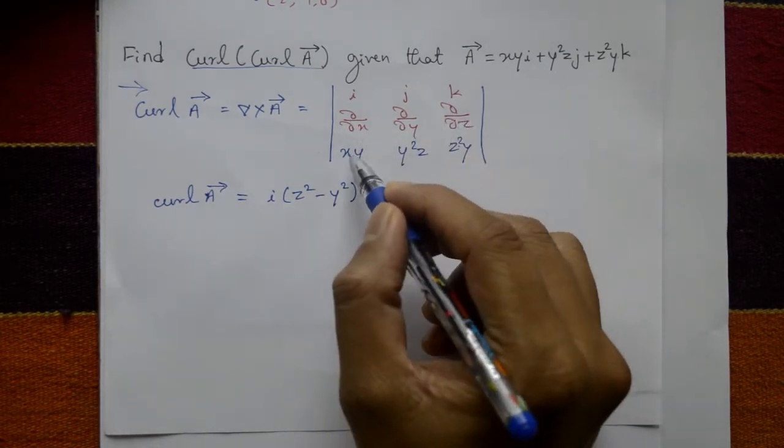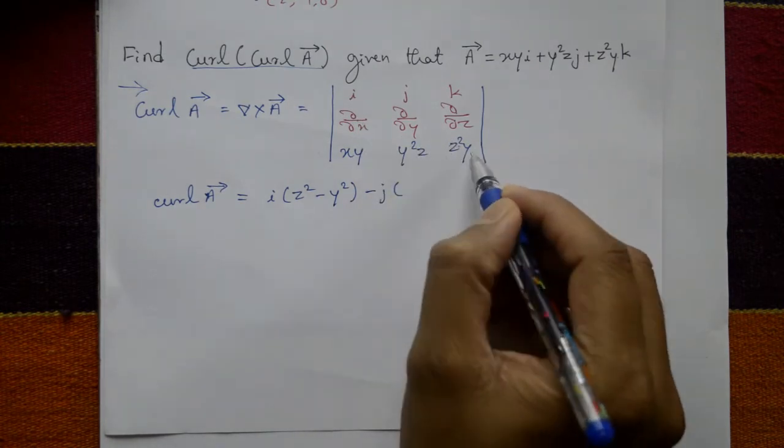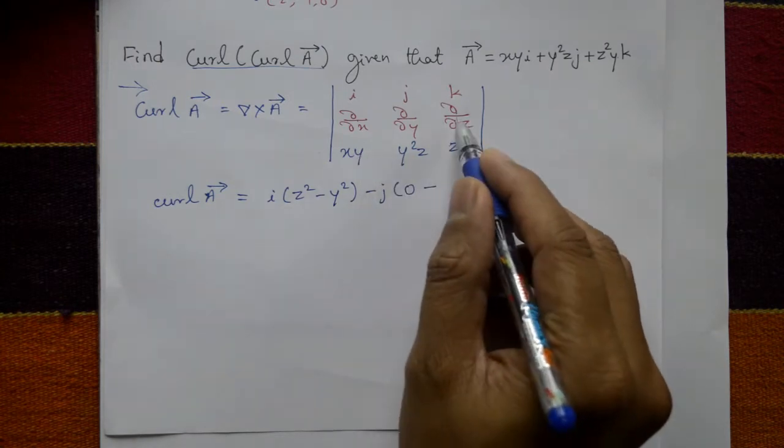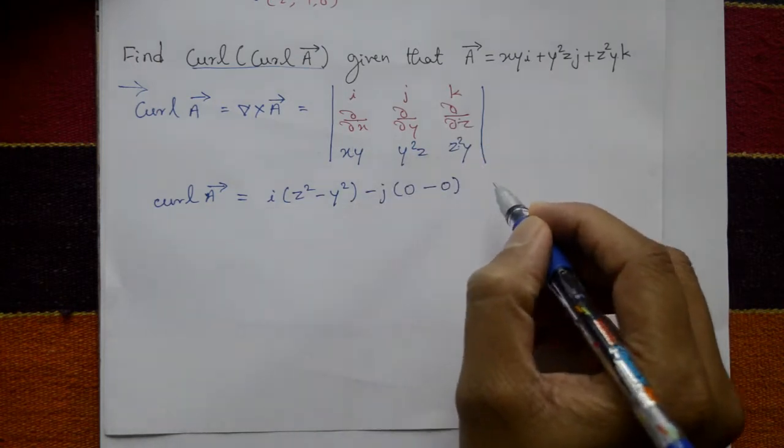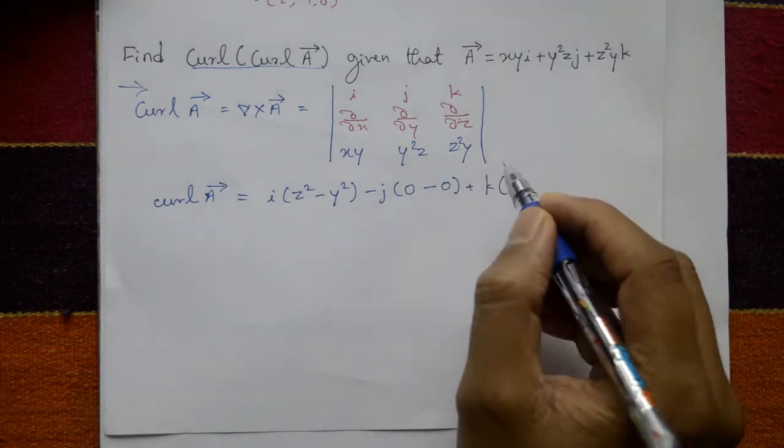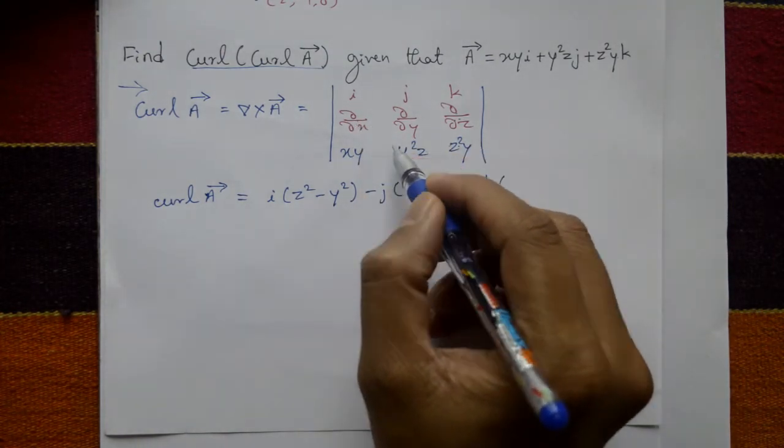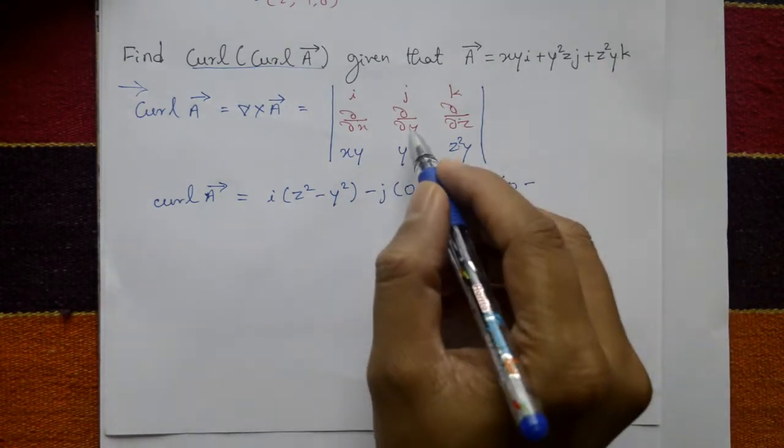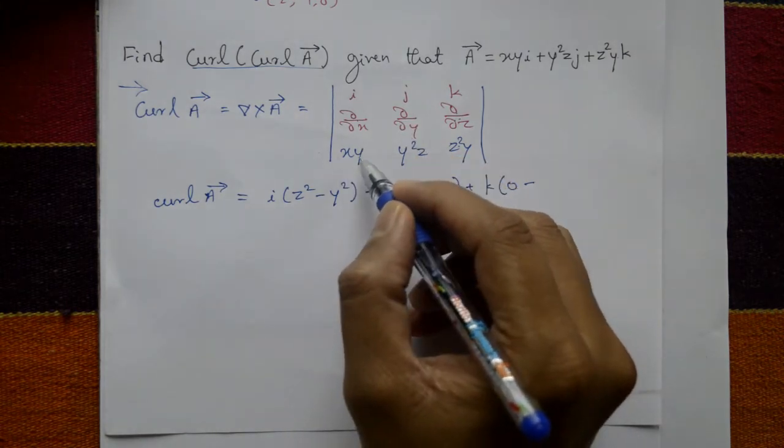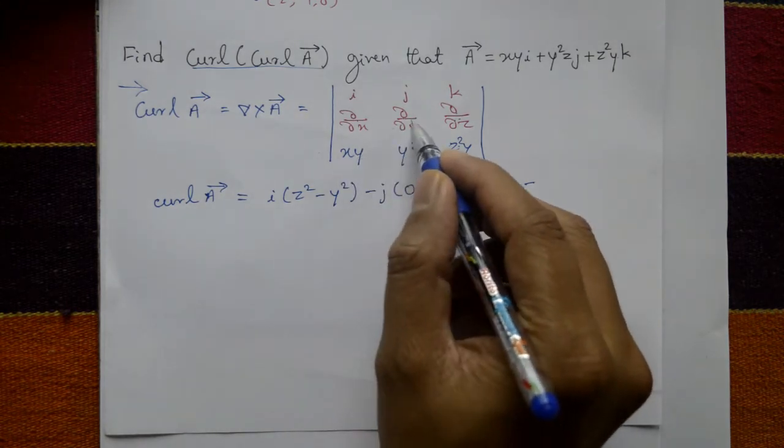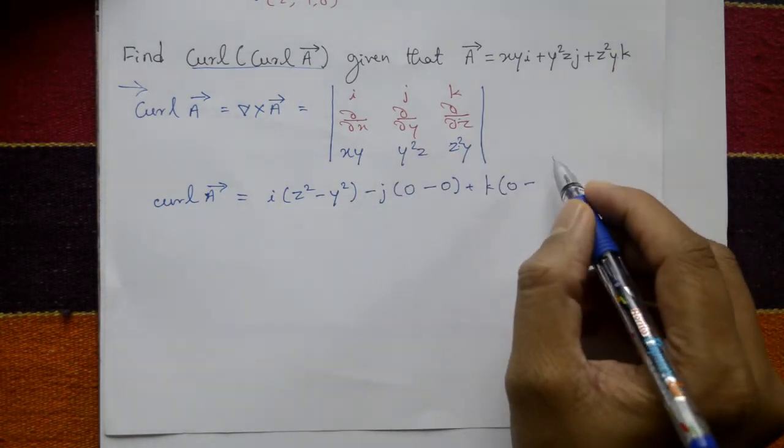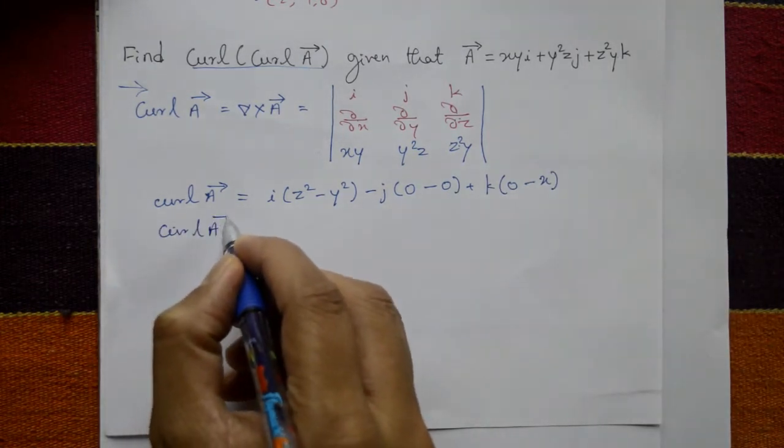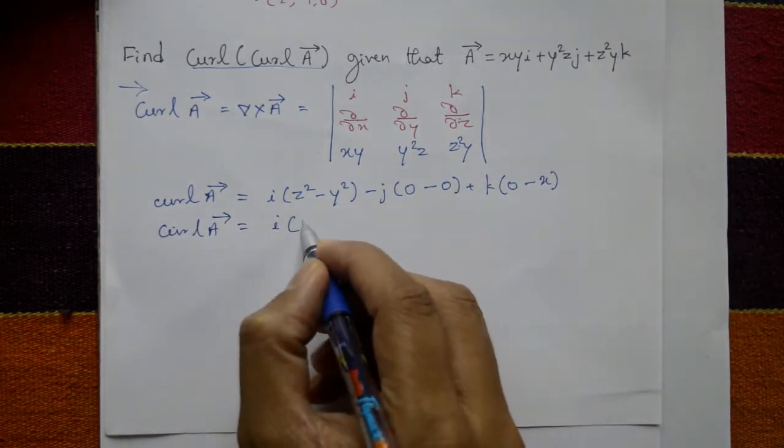Minus j into, j means multiplication. Differentiate this one with respect to x partially, no x variable means zero. Minus, now differentiate this one with respect to z, no z variable means zero, these are constant. Plus k into, so multiplication, differentiate this one with respect to x partially means again zero. Minus now differentiate xy with respect to y partially means x only.